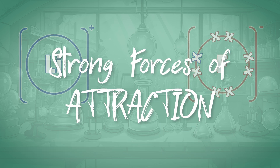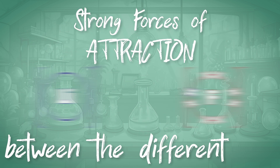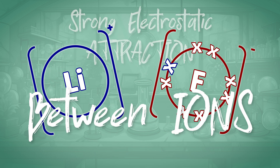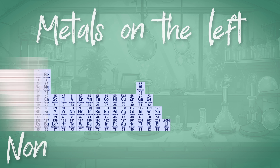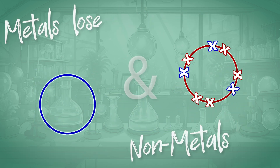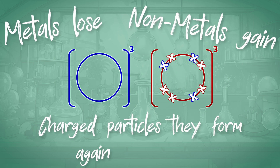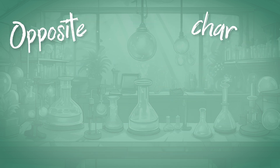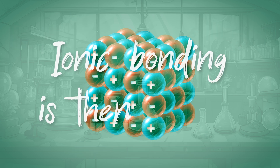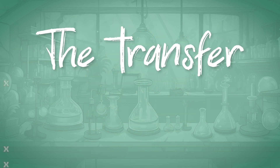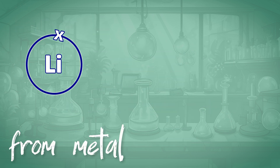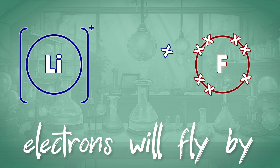The forces of attraction between the different ions — electrostatic attraction between ions. Metals on the left, non-metals on the right. A full outer shell of electrons is the goal in sight. Metals lose and non-metals gain. Charged particles, they form again and again. Opposite charges are attracted, ionic bonding is then formed. The transfer of electrons, that is ionic bonding — from metal to non-metal, electrons will fly by.